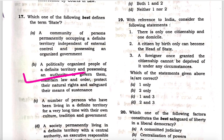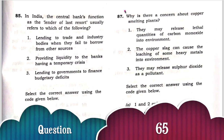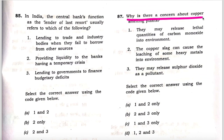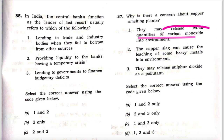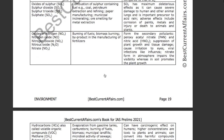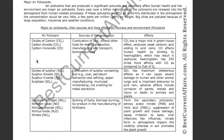Next question: Why is there concern about copper smelting plants? Three facts are given. Check the first one: it may release lethal quantities of carbon monoxide. This statement is wrong. This is our environment booklet for IAS Prelims 2021, page number 19. Here we have mentioned all the major air pollutants. Carbon monoxide sources are combustion of coal, oil, and other fuels, and burning of biomass — smelting is not there. So this statement is wrong.